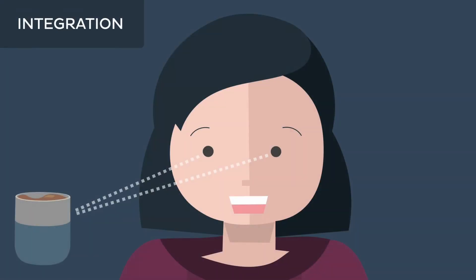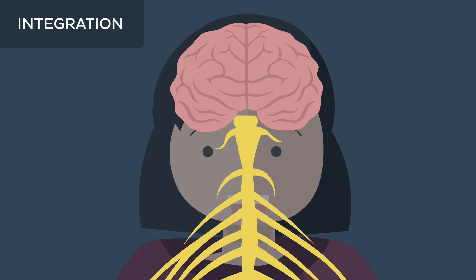Once we have seen the coffee cup, neurons in the brain have the task of filtering and processing this information to create a coherent picture in order to respond appropriately. This process is called integration.